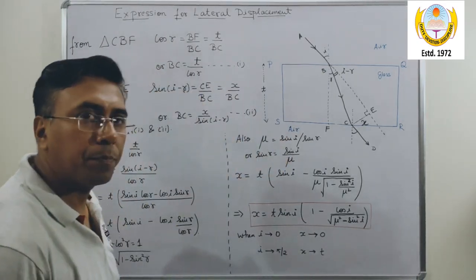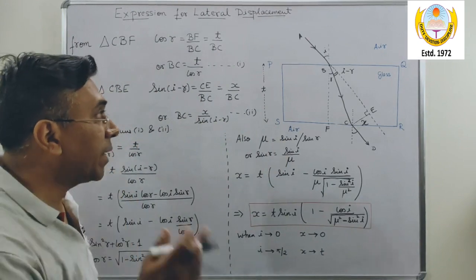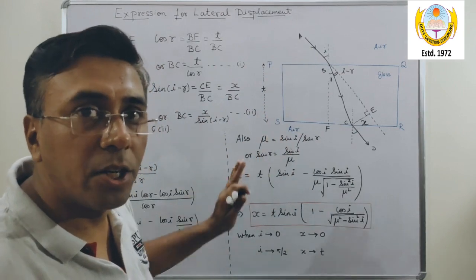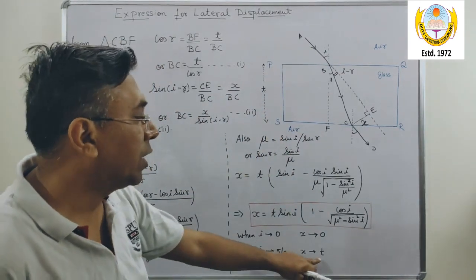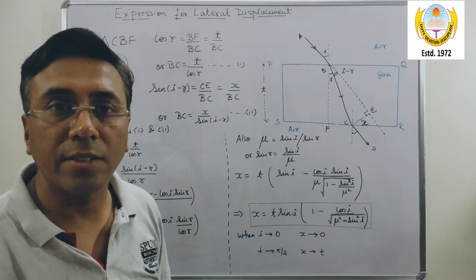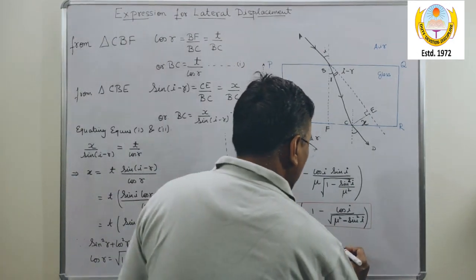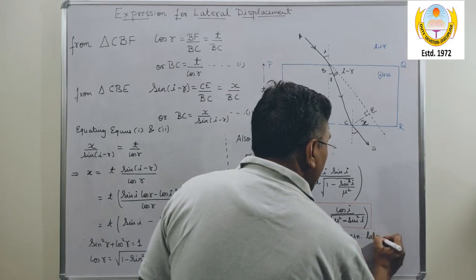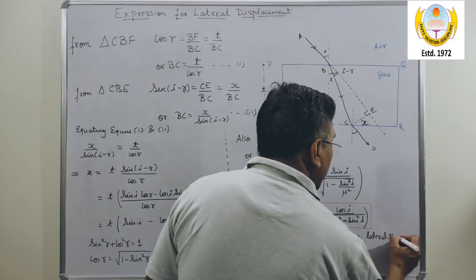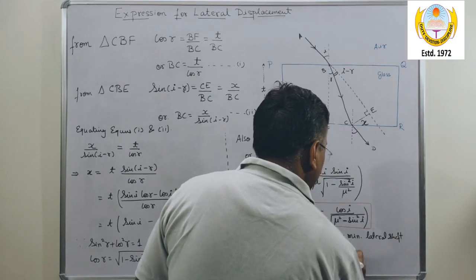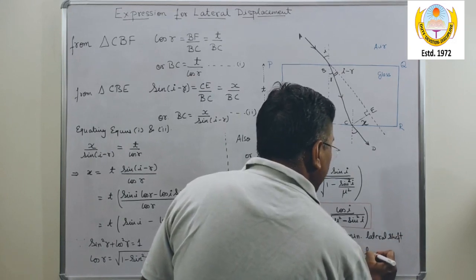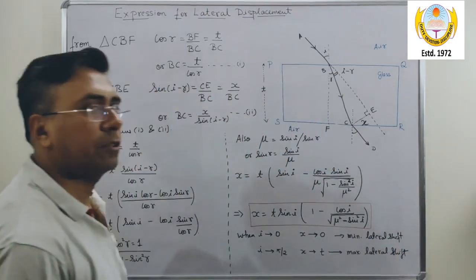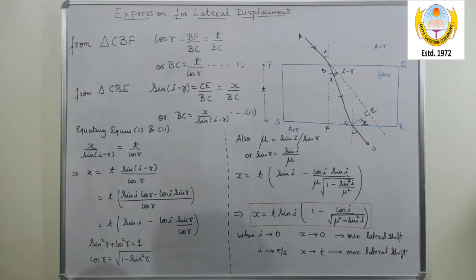When angle of incidence goes towards pi by 2, then maximum lateral shift can occur. T is nothing but the thickness of the glass slab. So this is the condition for the minimum lateral shift and this is the condition for the maximum lateral shift. Thank you.